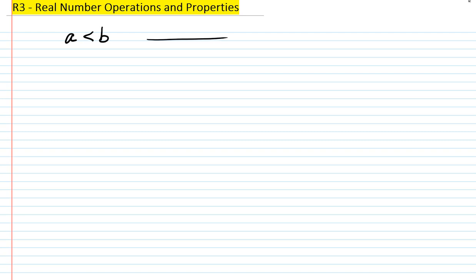The first thing I want to talk about is the order of numbers on the number line. When we say a is less than b, that means on the number line a lies to the left of b. If a is to the right of b, then a is greater than b. Here a and b are real numbers.